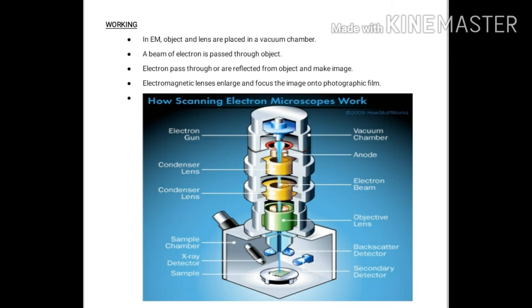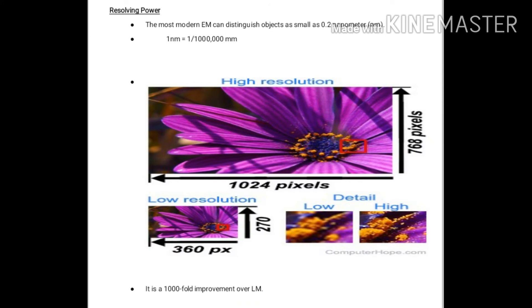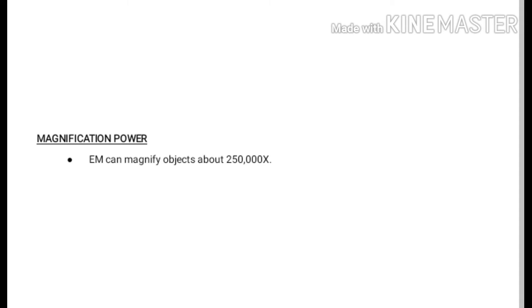Ab hum is ki resolution ki baat karenge. Is ki resolution power 0.2 nanometer hai. 1 nanometer is equal to 1 over 10 lakh millimeter — ek nanometer 1/1,000,000 millimeter ke equal hota hai. Yeh 0.2 nanometer ke object ko bhi clear kar ke dikhati hai. Aur is ki magnification power hai 2 lakh 50,000 — yeh kisi bhi object ko 250,000 guna bada kar ke hume dikha sakti hai. Yeh bohat zyada magnification power hai.